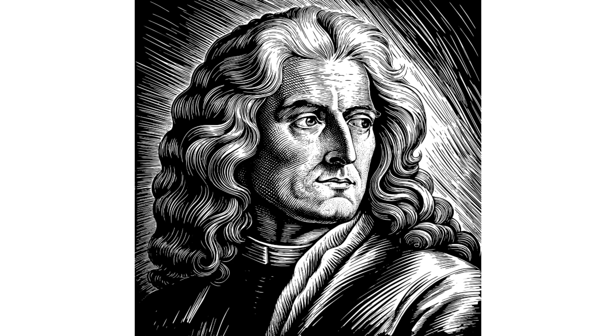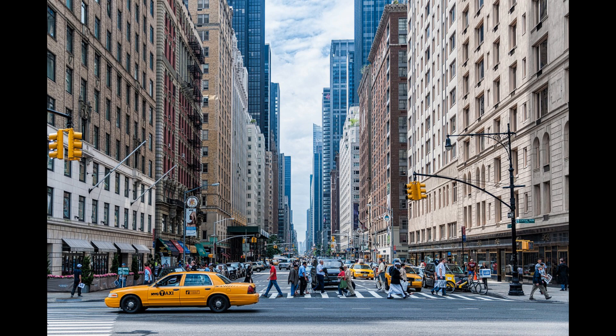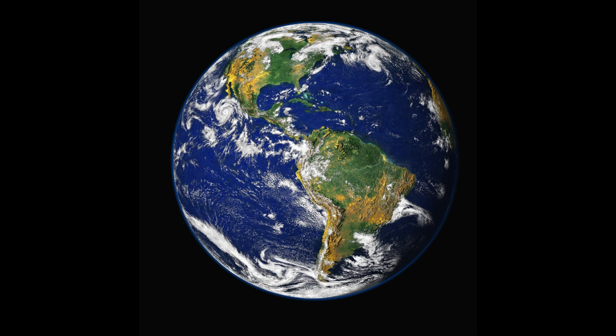Sir Isaac Newton's theory of gravity described it as a force that acts between two objects pulling them together. Technically anything which has a mass has a gravitational pull, but we don't feel these from small things, which is why you don't feel the gravitational pull from the person sitting next to you, or even from bigger objects such as cars and buildings. We only feel really big gravitational pulls from things such as the Earth.